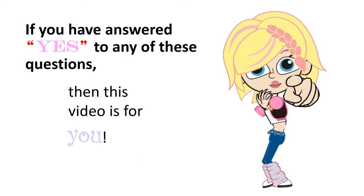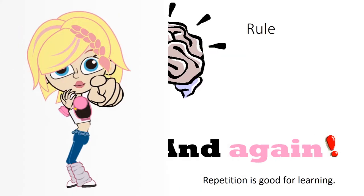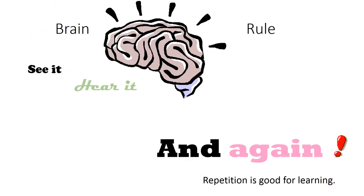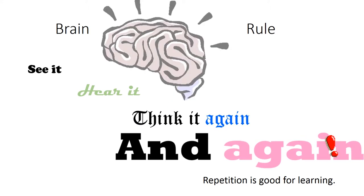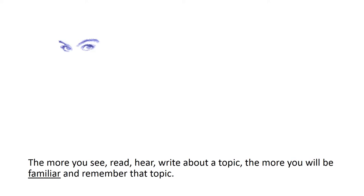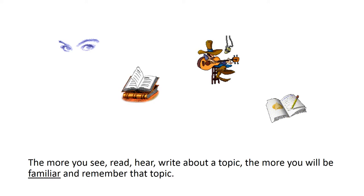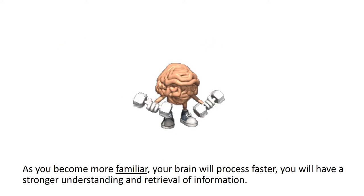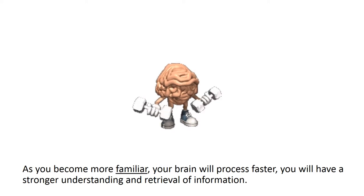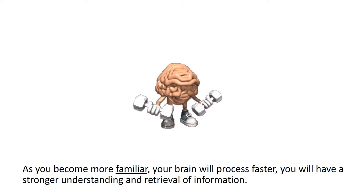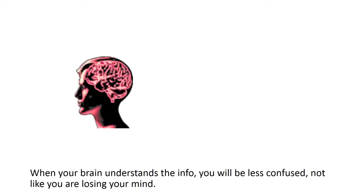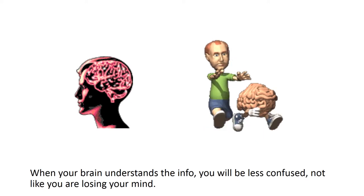Brain rule: See it, hear it, think it again and again. Repetition is good for learning. The more you see, read, hear, write about a topic, the more you will be familiar and remember that topic. As you become more familiar, your brain will process faster and you will have a stronger understanding and retrieval of information. When your brain understands the info, you will be less confused, not like you're losing your mind.